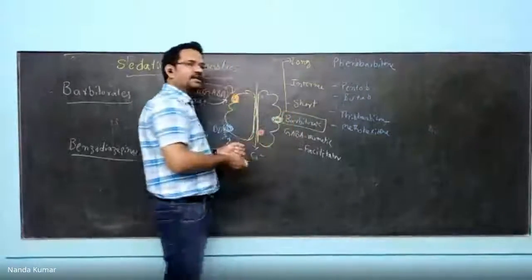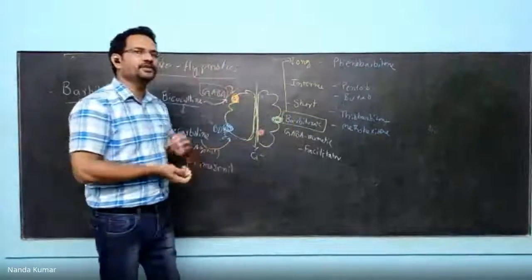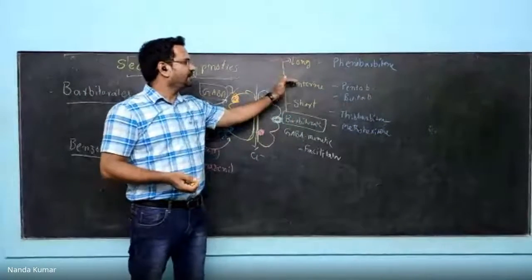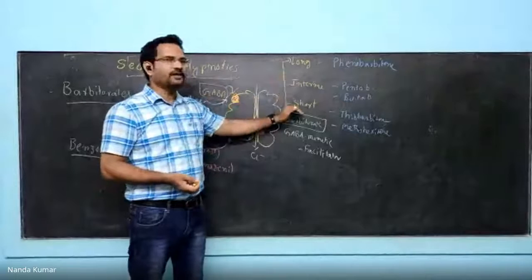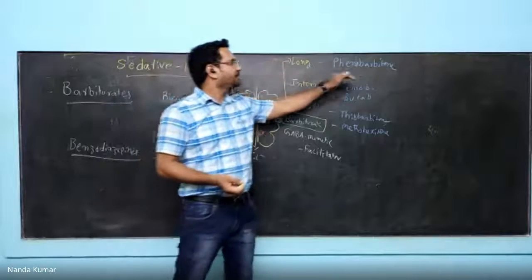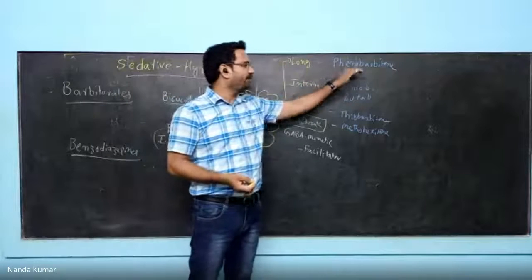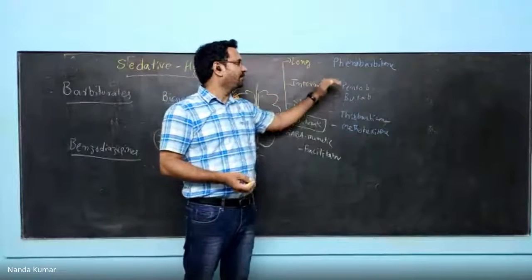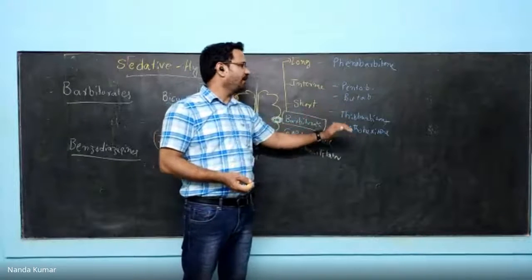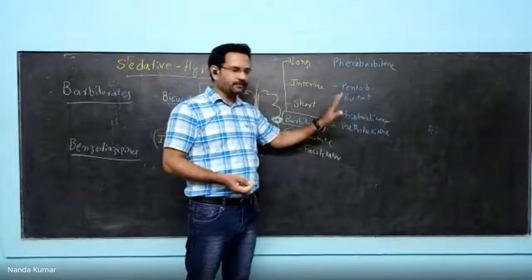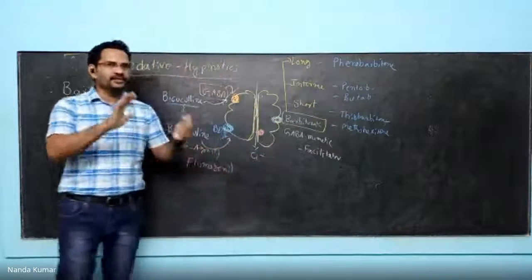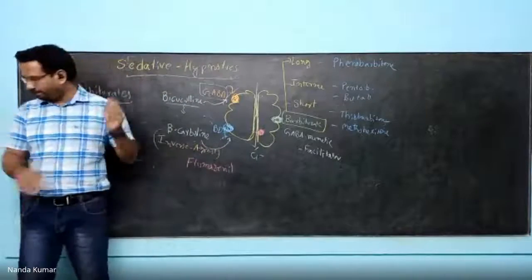Barbiturates are classified according to the duration of action: long-acting, intermediate-acting, and short-acting. Long-acting barbiturates are phenobarbitone. Intermediate: pentobarbitone and butabarbitone. Short-acting: thiobarbitone and methohexitone. These are all the drugs in the barbiturate class.